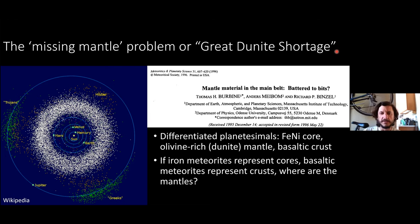There just isn't a lot of olivine-rich material in planetary science, which doesn't make sense given that during the early solar system a lot of differentiation took place. You have this population of planetesimals forming with iron-nickel cores, olivine-rich or dunitic mantles, and basaltic crust. This is generally agreed upon as the way planets differentiate.